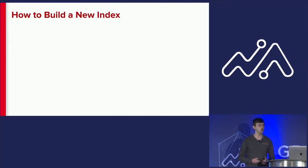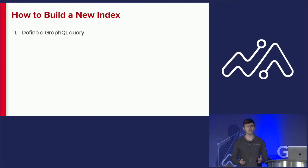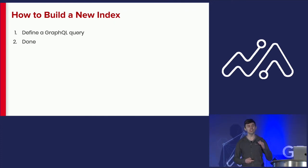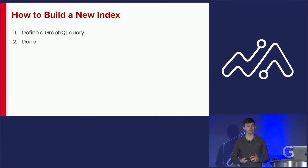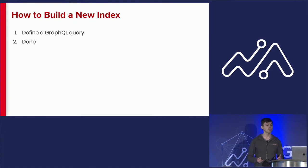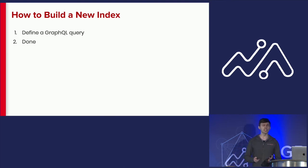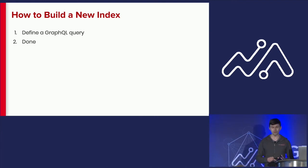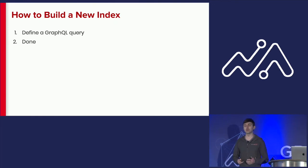After you set things up, how do you tell it to index something? The first step is you need to define a GraphQL query. And that's it. The query defines exactly which fields you want to index and also gives you the ability to pull in data for those fields. The relationships in our graph give us enough information to keep our index up to date. Essentially, the code we wrote at the beginning of this year was enough to keep our indices up to date, even as our schemas changed or as we built new indices.